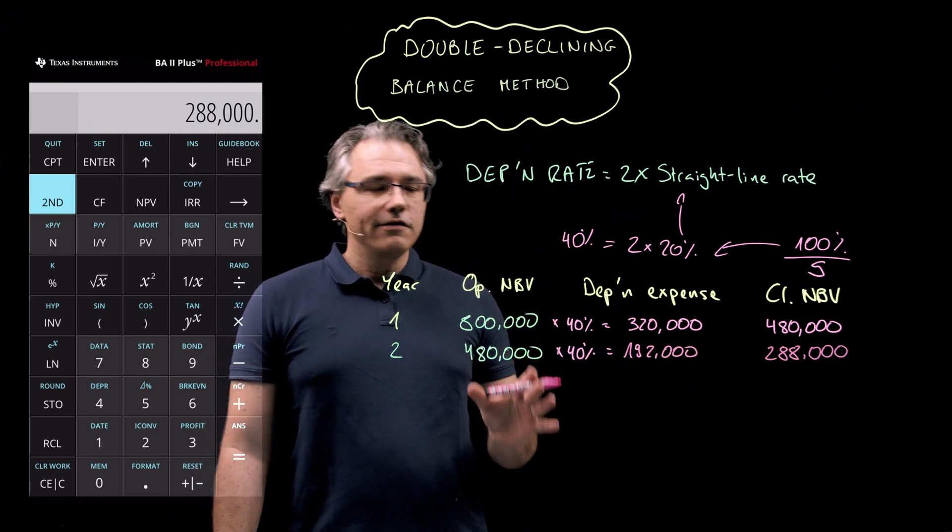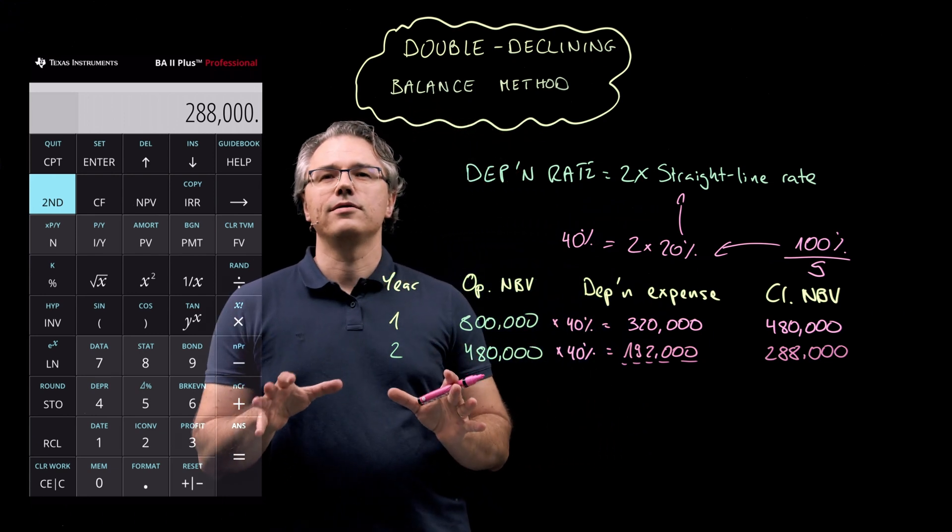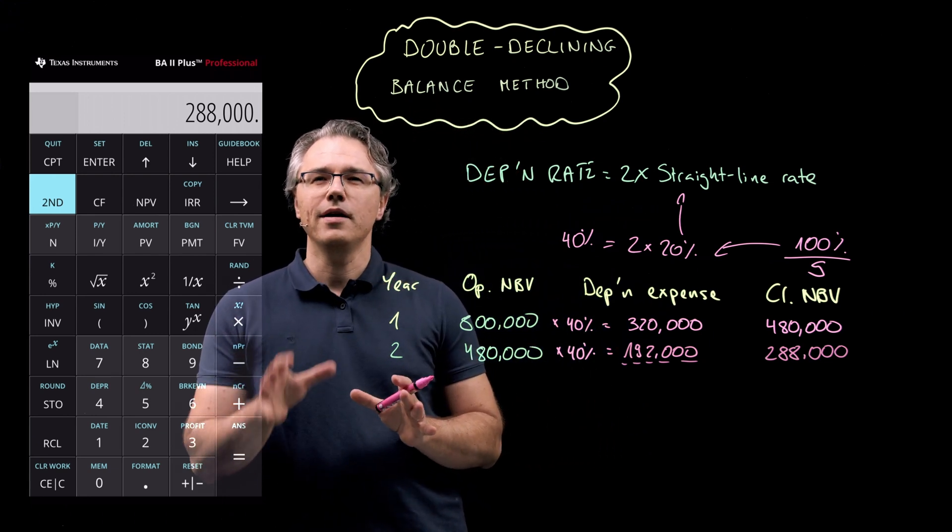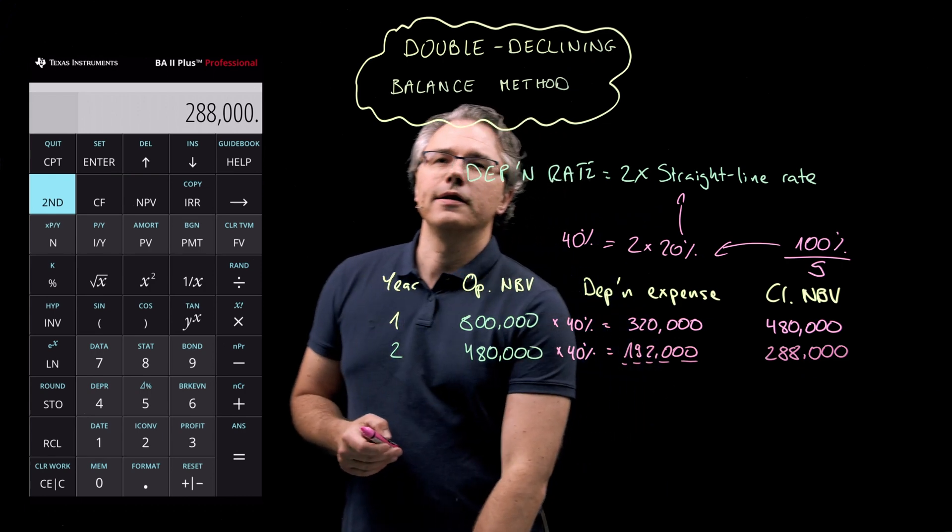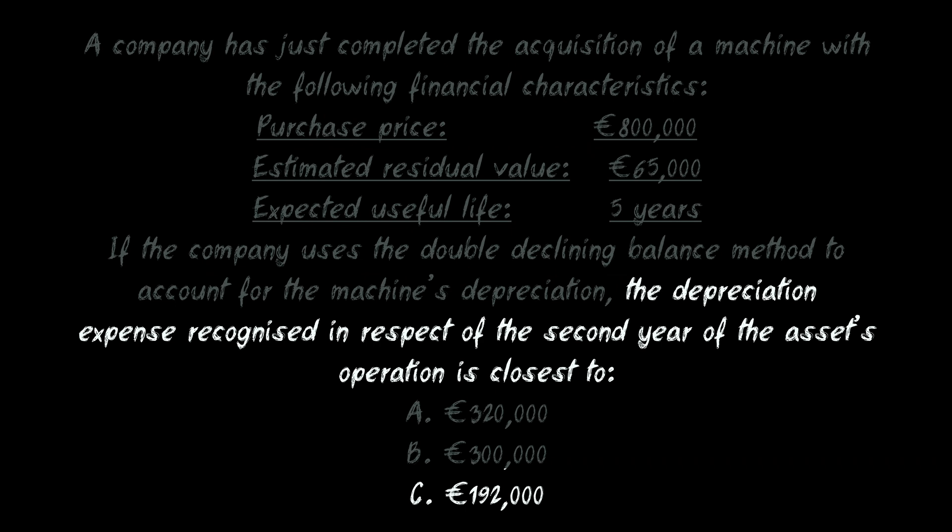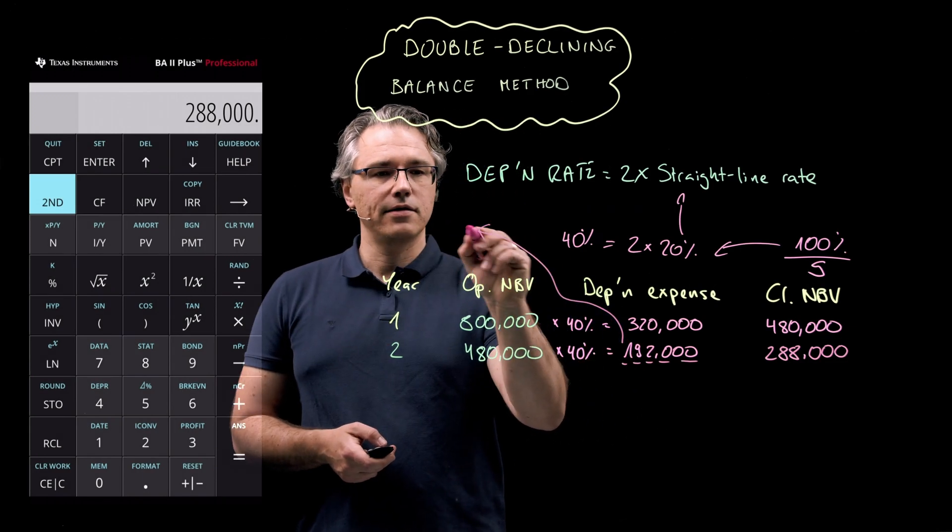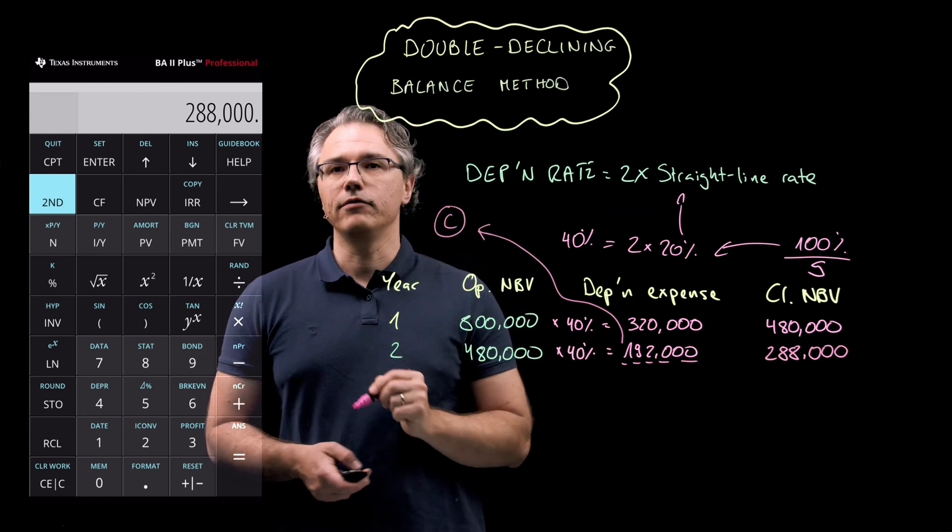Now, I believe that this result allows us to answer the question. This is what the question was actually asking for. Let's have a look. The depreciation expense recognized in respect of the second year of the asset's operation is closest to. And as you can see, the result we just arrived at corresponds with answer C. So, let me write that official solution down over here.